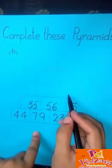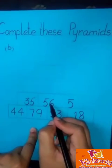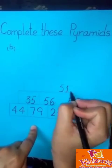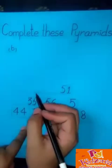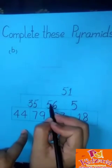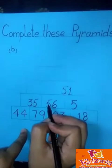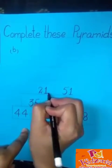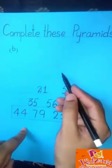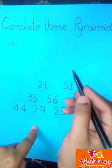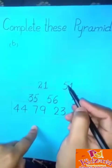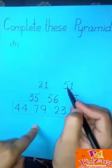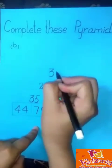Now we solve the second row of this pyramid. We subtract 56 by 5. When we subtract 56 by 5, we get the answer of 51. And we write the answer in this box. Okay students, now we subtract 56 by 35. When we subtract 56 by 35, we get the answer of 21. Now students, this is our last box of this pyramid. How to get the answer? We subtract 51 by 21. When we subtract 51 by 21, we get the answer of 30.